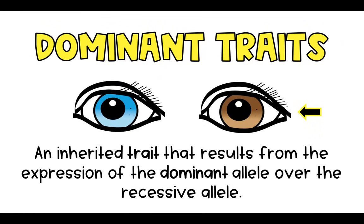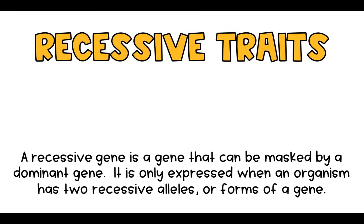Recessive traits are genes that can be masked by dominant traits. They might be in your DNA but might not show up in your physical appearance. The only way a recessive trait can be expressed is when you have two recessive alleles — meaning both your mom and your dad gave you those recessive alleles, like two sets of instructions for blue eyes.